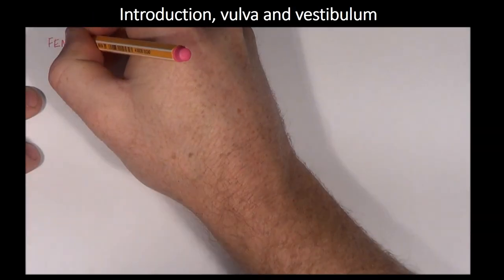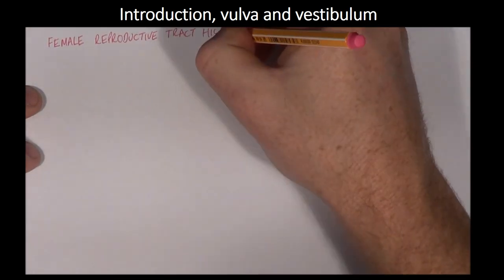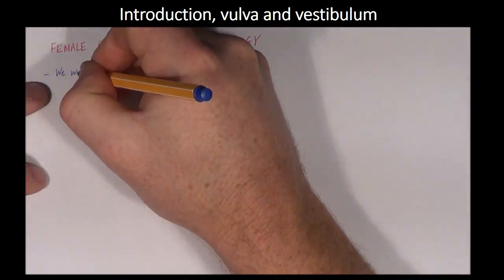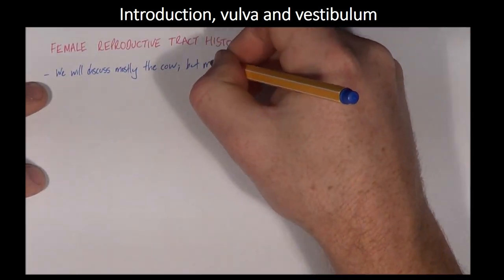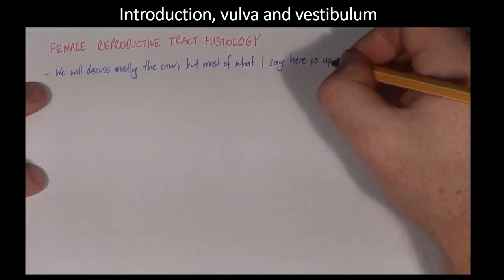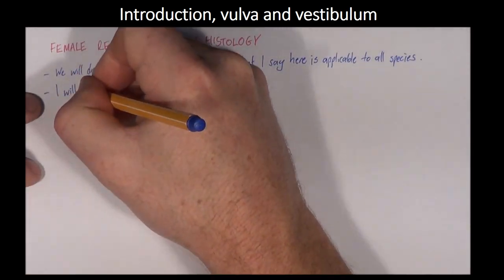Even though this video falls under the section on the reproductive tract of the cow, the histology I'm going to discuss here applies to all of our domestic species. Where there are important species differences, I'm going to point these out to you.